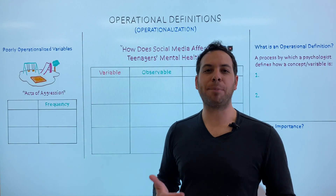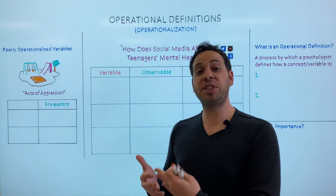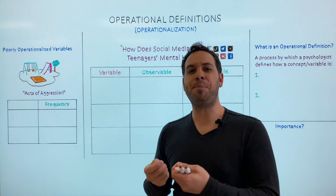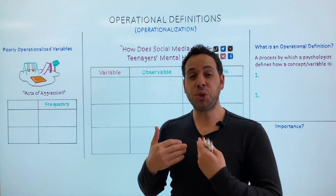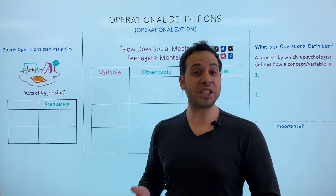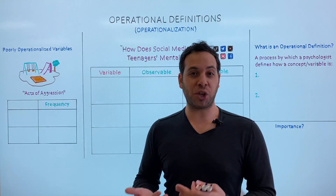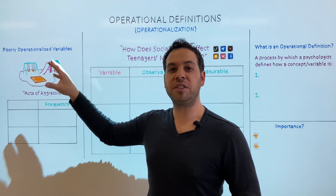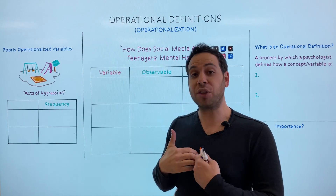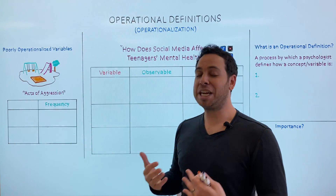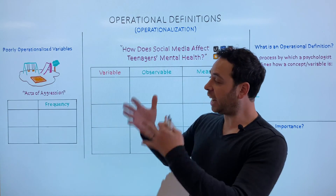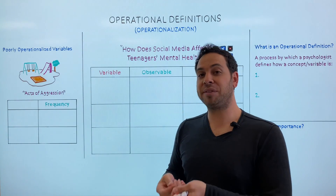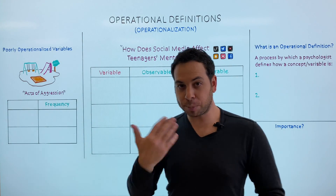To better understand operational definitions, let's first take a look at a study that has poorly operationalized variables. Sometimes the best way to understand a concept is to talk about it when things go wrong — that should provide some clarity into what this term actually means. So here's our study: we want to know how aggressive boys are. The researchers set up a study where children are playing, and they are tallying how many acts of aggression they see.